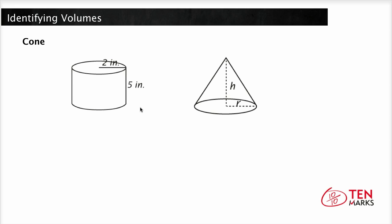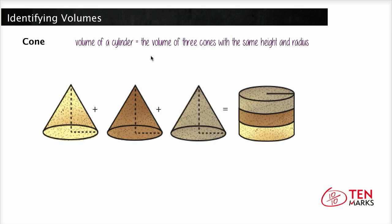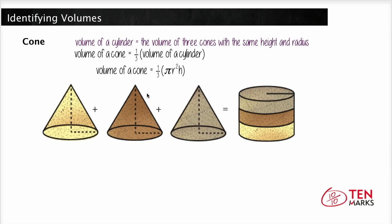Let's see how a cone compares to a cylinder. If you took a cylinder and made a cone out of it with the same height and radius, how many cones could fit inside a cylinder? Looking at this image, we can see that if we filled up a cone with sand and poured it into a cylinder with the same height and radius, you could pour exactly 3 cones full of sand into the cylinder. So the volume of a cylinder equals the volume of 3 cones with the same height and radius. A cone is 1 third the volume of a cylinder, which gives us the formula: volume of a cone equals 1 third pi r squared times h.